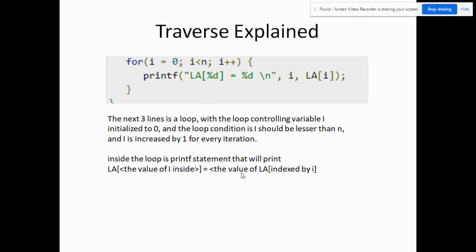Inside the loop is actually a print statement that will print LA. The percent d will represent or will be substituted by the value of i, which is actually the value of our controlling variable. Equal, equal to another percent d that will be substituted by the value of LA indexed by i.